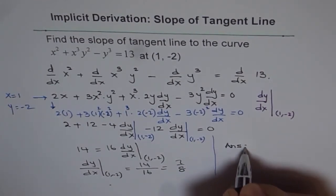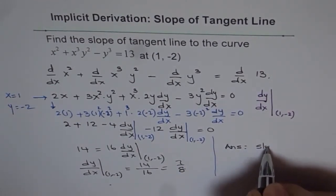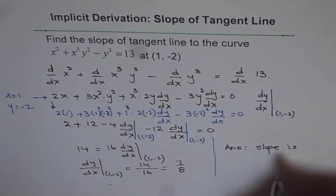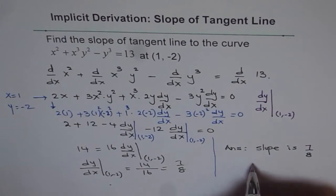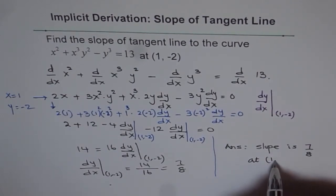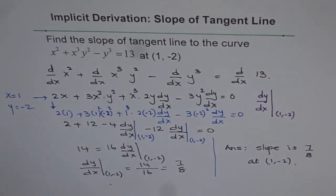So we can write down our answer as: slope of the tangent line is 7/8 at (1, -2). So that is how we are going to do it. I hope you appreciate early substitution of 1 and -2, the value of the point, and finding the answer faster. Thank you.